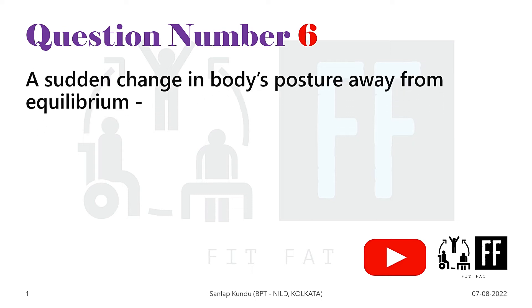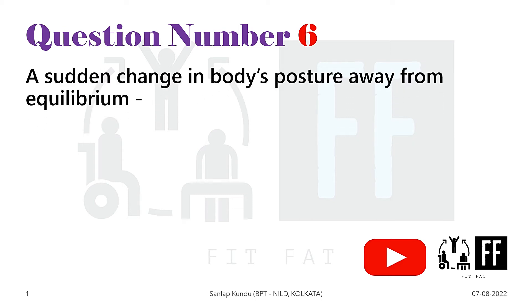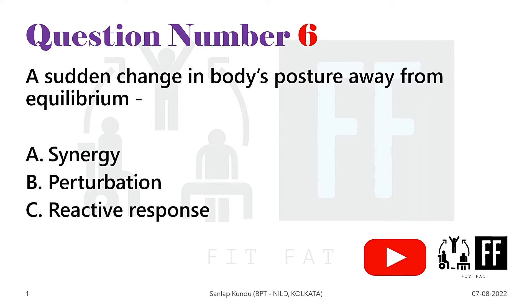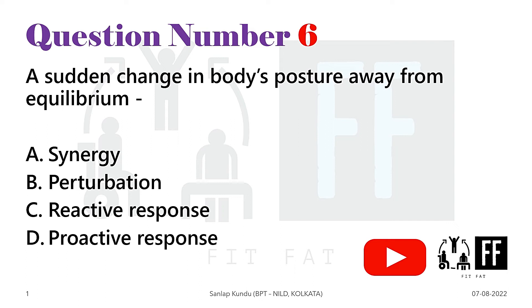Question number six: a sudden change in body's posture away from equilibrium. The options are option A synergy, option B perturbation, option C reactive response, and option D proactive response.